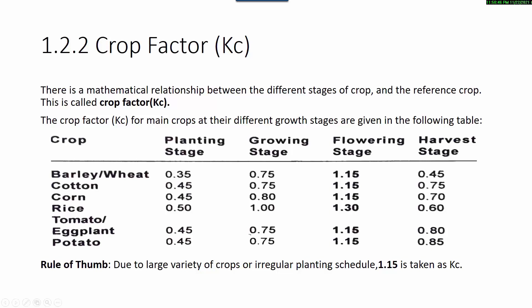Crop factor: There is a mathematical relationship between the different stages of crop and the reference crop. This is called the crop factor. The crop factor for main crops at their different growth stages are given in the following table. In this table for different various crop types, we have different growth stages.